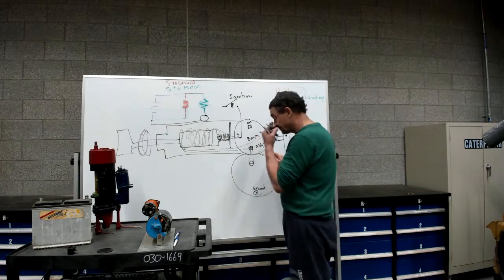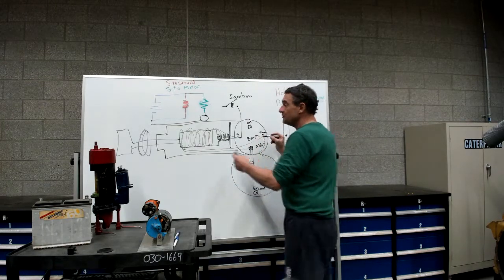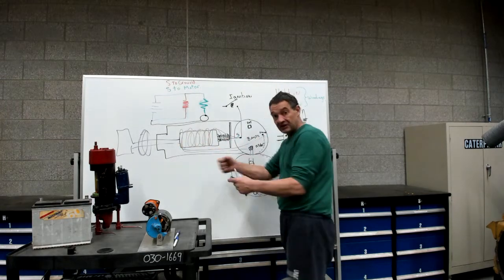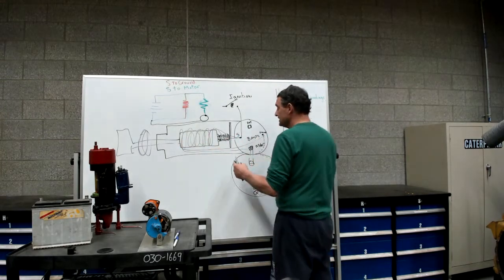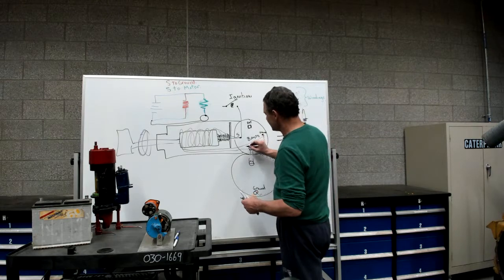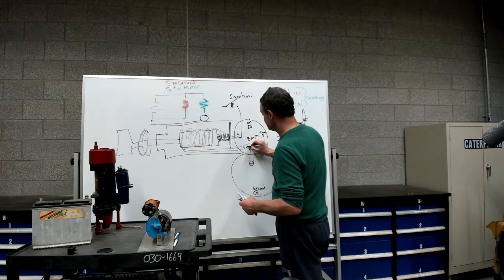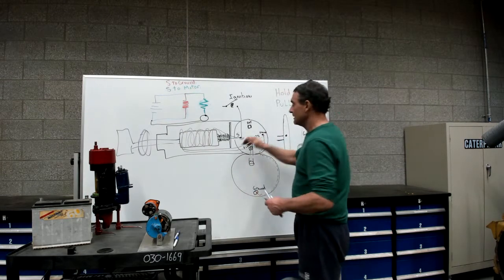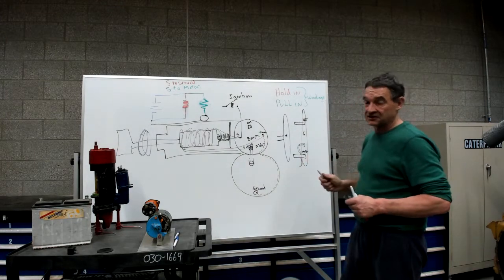If you have this armature inside the solenoid mount, it should pull in, and then you're going to read about 40 amps coming through this. So that's how you check those circuits.